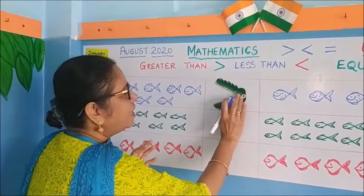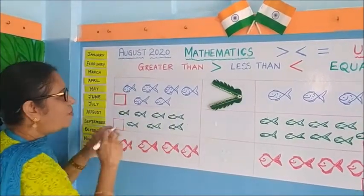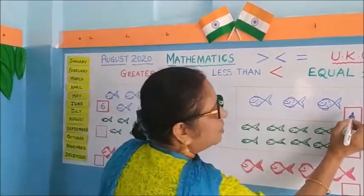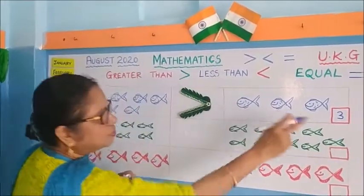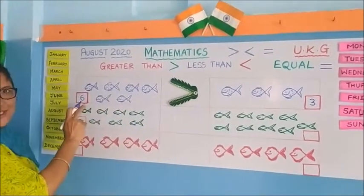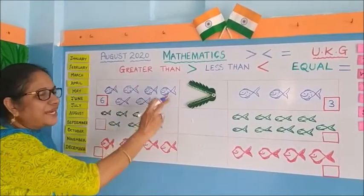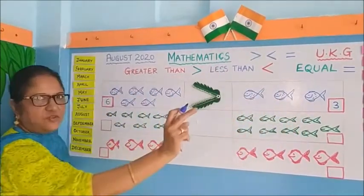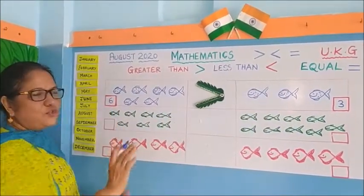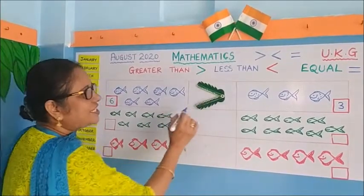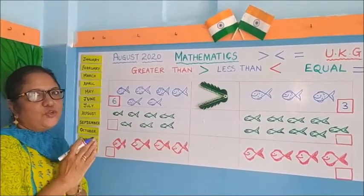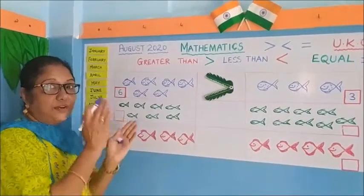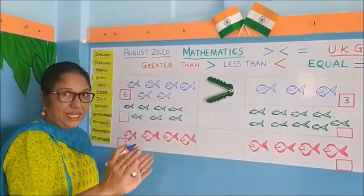This hungry alligator wants to eat six fishes, not one, two, three. It says no to the smaller side and yes to the numbers that are more. This number is less, so it doesn't want it. This number is more, so the alligator wants to eat. So this greater than sign is shown only where there is more - where the number is greater, where the number is big.